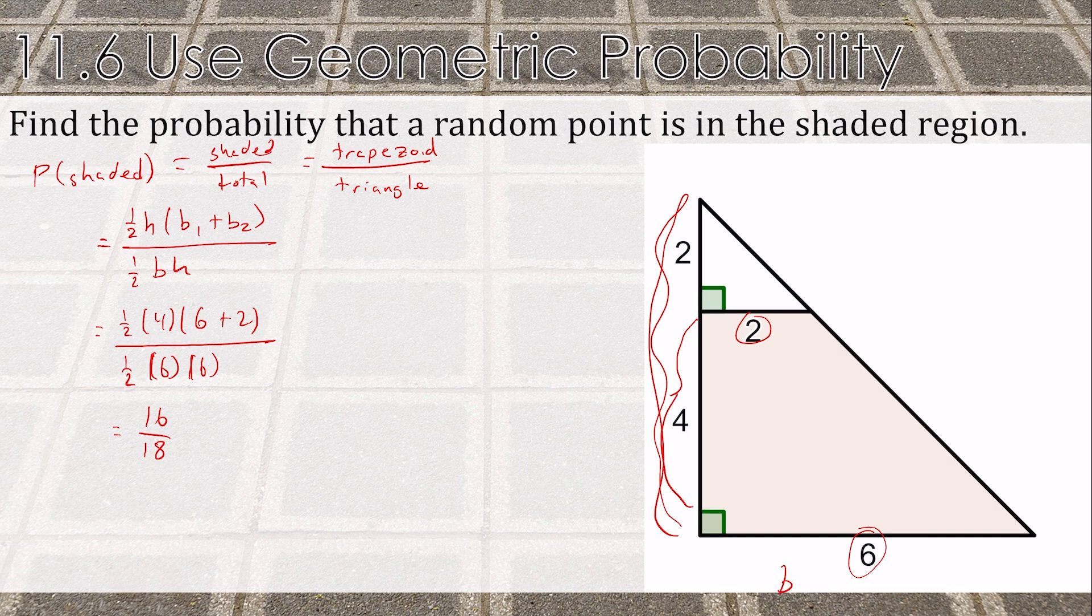Which reduces to 8 over 9. If I put it in a calculator, that's about 88.9%. So it's very likely to hit the shaded area.